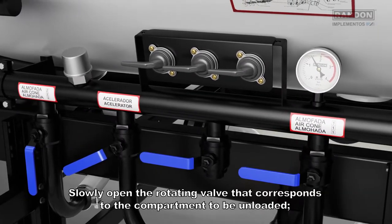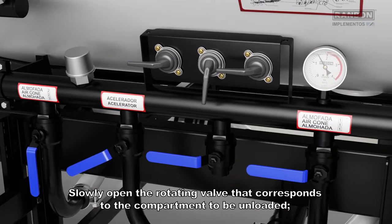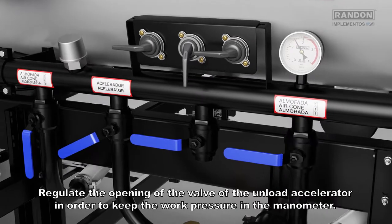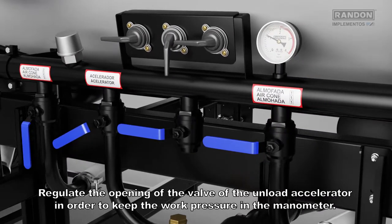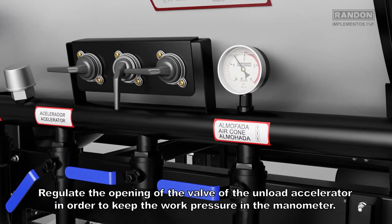Slowly open the rotating valve that corresponds to the compartment to be unloaded. Regulate the opening of the valve of the unload accelerator in order to keep the work pressure in the manometer.